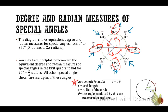The arc length formula is S = Rθ, where S is arc length, R is the radius, and θ is the angle in radians. If you know the radius and the angle in radians, you can find the arc length by multiplying theta times the radius.